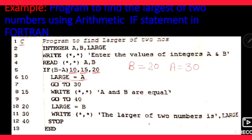Next: agar isi same example mein hum A aur B dono ki value equal lein — A ki value bhi 20 lein — to B aur A ka jo difference hai wo 0 aayega. Agar 0 aata hai difference, to statement number 15 will be executed. To seedha control 15 number statement pe jaayega. Dono equal hain, to display karna hai 'A and B are equal.' To 15 number statement dekho: WRITE statement hai — 'A and B are equal' — that is in single quotes, means this will be printed.